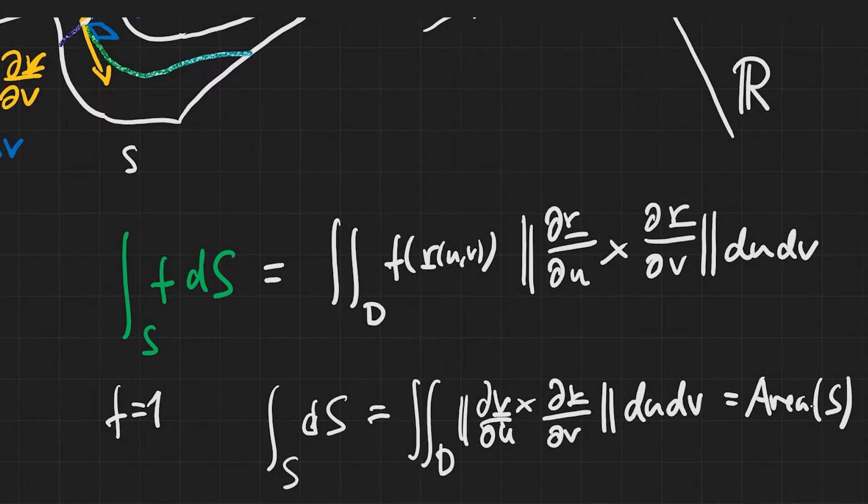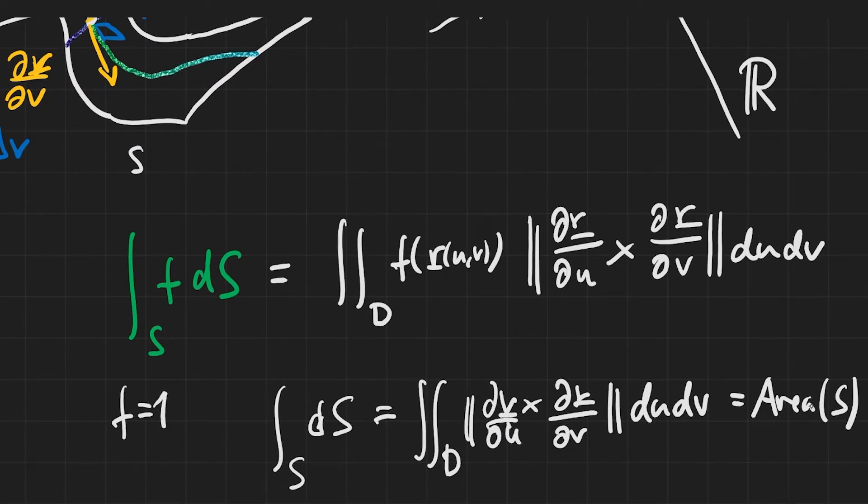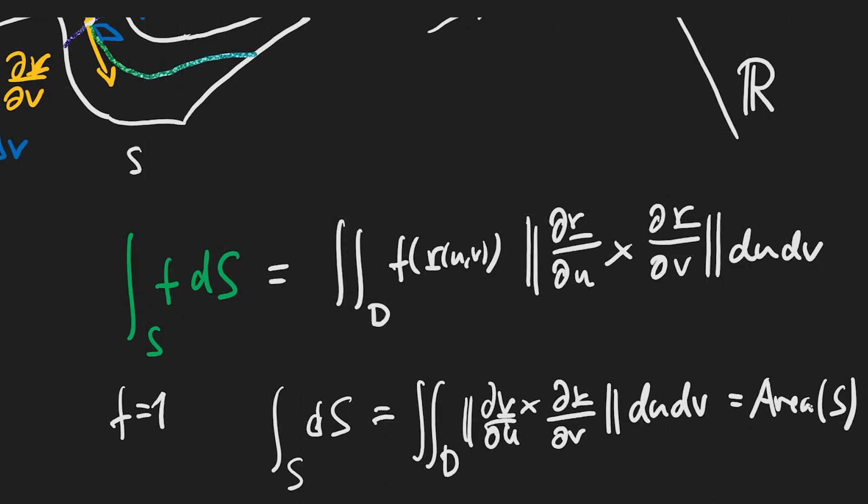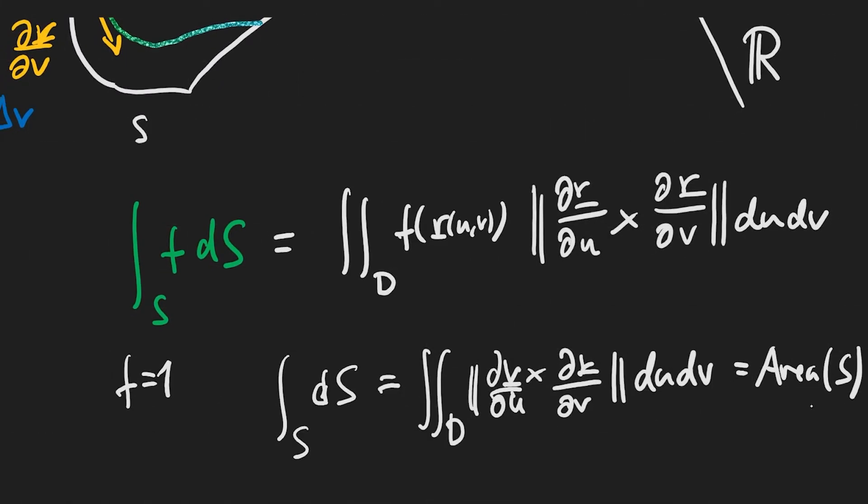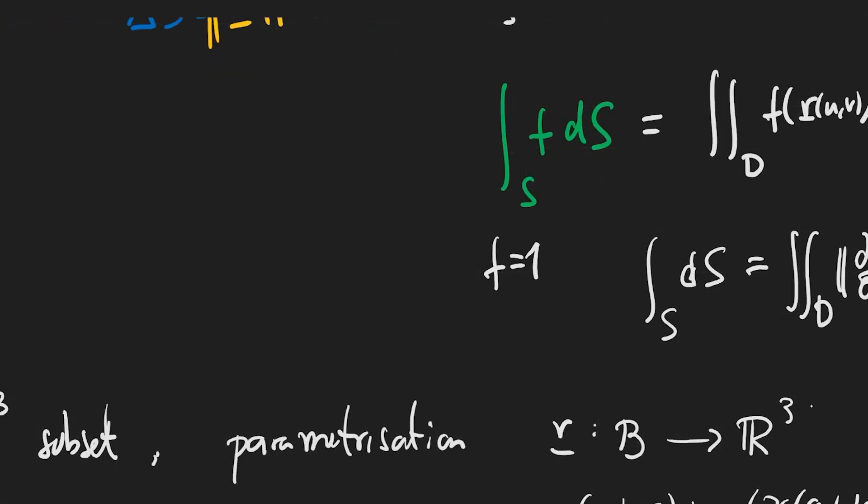And so, indeed, the final formula looks like this. We have the function composed with the parameterization times the conversion factor between these two areas. Again, if you set the function to one, your formula will give you the total surface area of your surface.